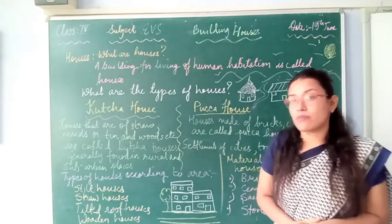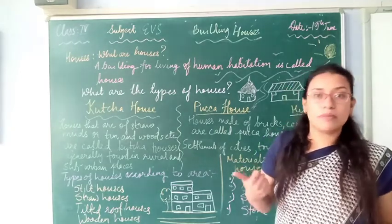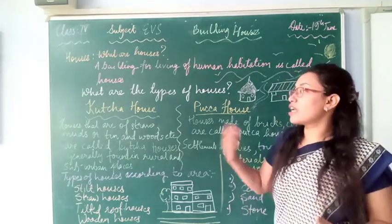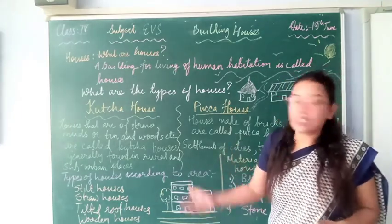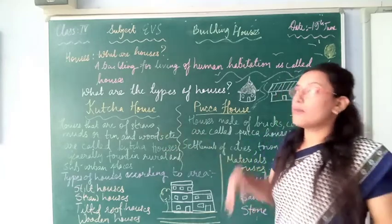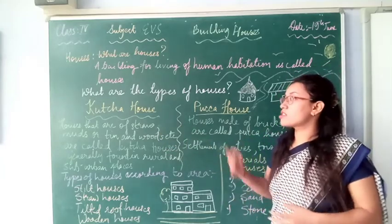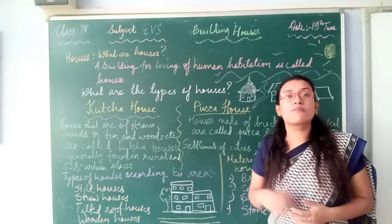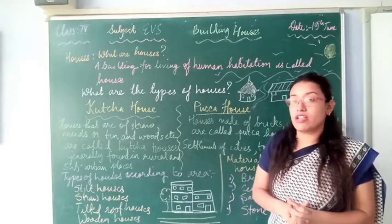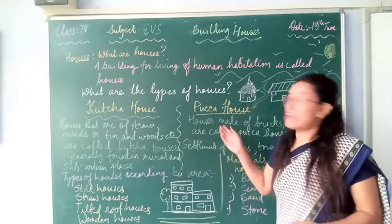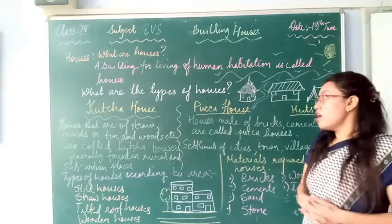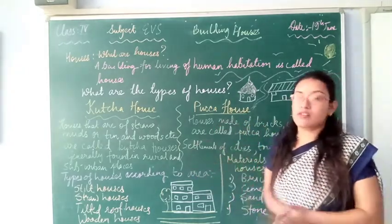There are two different types of settlement: one is permanent settlement and one is temporary settlement. We can relate kachha houses to temporary settlements, but not exactly, because under kachha houses people also make structures that can easily be destructible, whereas a pakka house is not easily destructible.